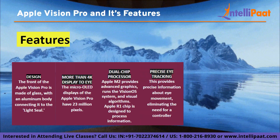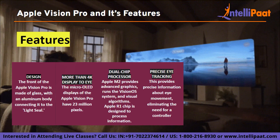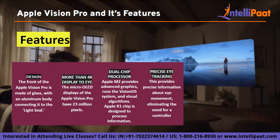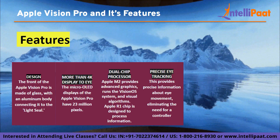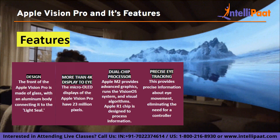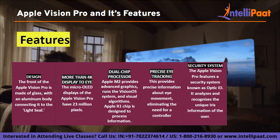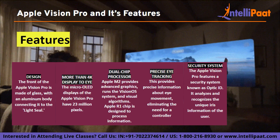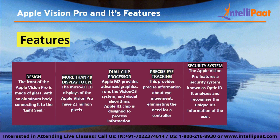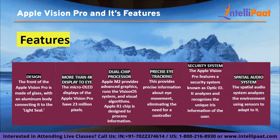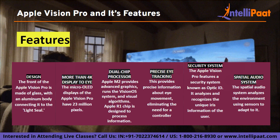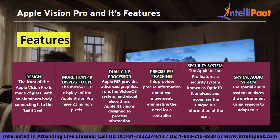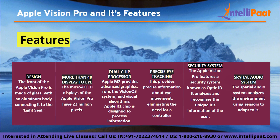Precise eye tracking eliminates the need for a controller. The tracking system of Apple Vision Pro consists of LEDs and infrared cameras that project invisible light patterns onto the eye, providing precise information about eye movement. Security system: Apple Vision Pro features a security system known as Optic ID, which analyzes and recognizes the unique iris information of the user. Spatial audio system: two audio pods located next to the ears provide personalized audio and allow the user to hear whatever is happening around them. The spatial audio system analyzes the environment using sensors to adapt to it.